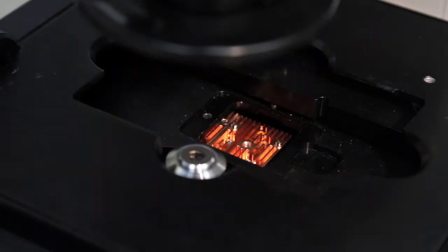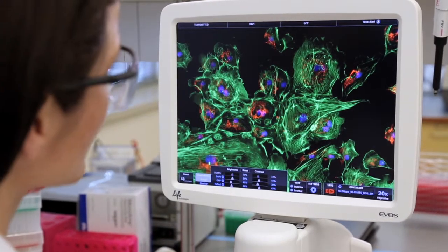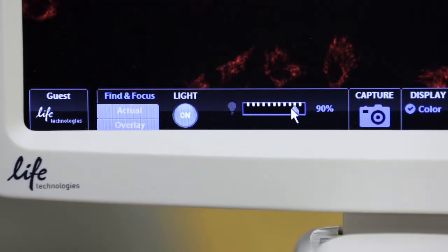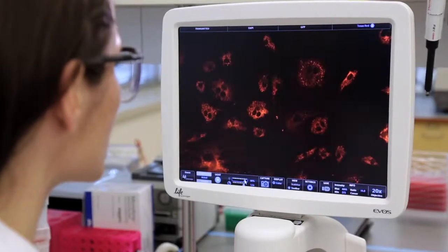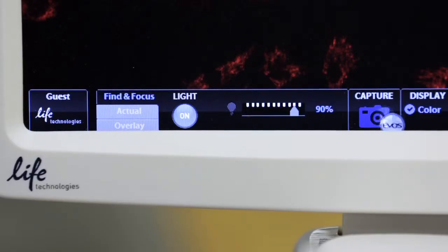Capturing 3-color fluorescence images is easy using the intuitive user interface on the EVOS FL imaging system. Simply turn on the light source and focus the image. Brightness and contrast can be adjusted with the on-screen slider bars. Click the capture icon to capture the image.